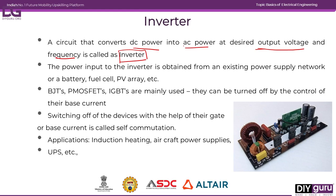The input to the inverter is DC. This DC power can be obtained from any existing power supply network, or it may be from a battery, a fuel cell, or even from a photovoltaic array. As we know, the output of a photovoltaic array is DC, which can also be given as input to the inverter.